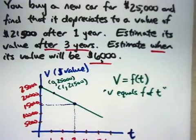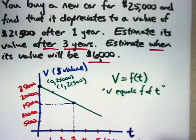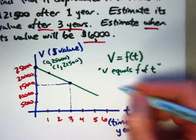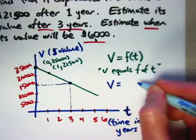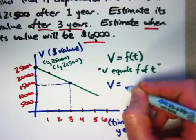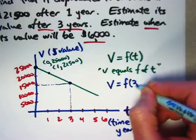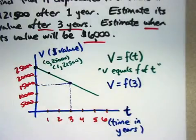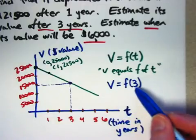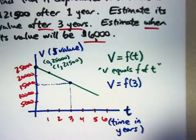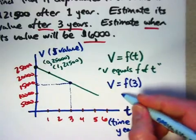When t is 3, what is V? In function notation, what is V when t is 3? I write that like this: V equals f of 3, and that's the way you say it, v equals f of 3. And that's not f times 3, it's f of 3, just a symbolic way of representing the value of the car when t equals 3, substituting t equals 3 in there. It looks like it's a little bit less than $15,000.